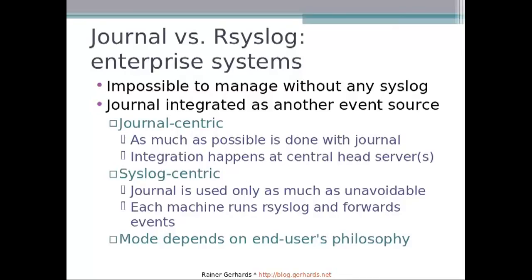Or just the opposite: a syslog-centric approach, where the journal is used only as much as unavoidable, and each and every machine runs RSyslog and forwards events via syslog mechanisms. Which mode is actually selected — based on our experience with the event log — depends much on the end user's philosophy, setup, devices, and network infrastructure. So it's up to the end user and it's hard to predict. From the event log point of view, it was always much more syslog-centric than centric on the event log, but we'll need to see how this evolves on the journal.